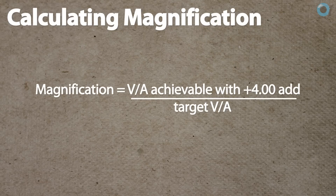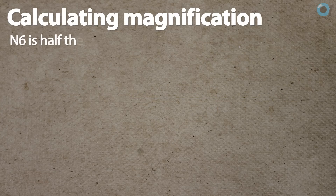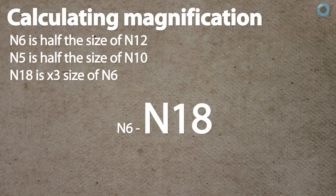There are several methods used to predict the likely magnification needed for a task. For instance, N18 is 3 times the size of N6, so you would need times 3 magnification to spot read N6. For example, a person who wants to read a newspaper print size of N8 at 25 centimetres but can only manage N16 with a plus 4 add at 25 centimetres — the magnification required would be 16 over 8, or 2 times. This would in theory just about enable them to see N8, but fluent reading would not be possible, and an acuity reserve of at least times 2 should be allowed. Therefore, times 4 might be more appropriate.